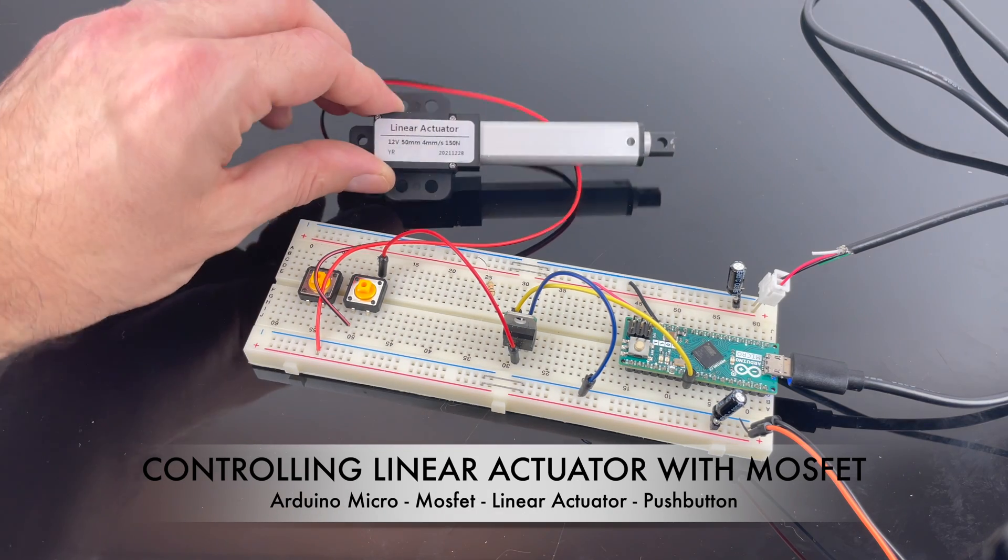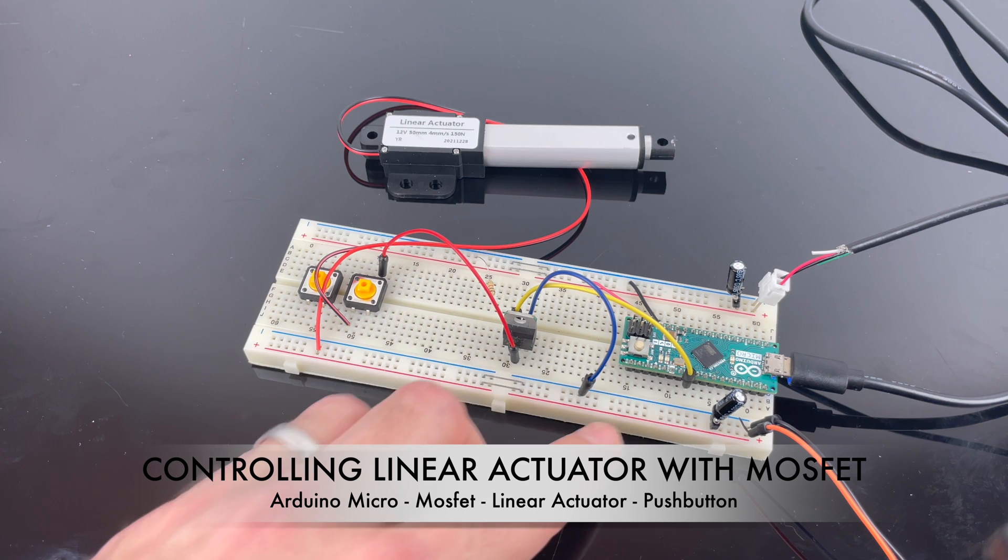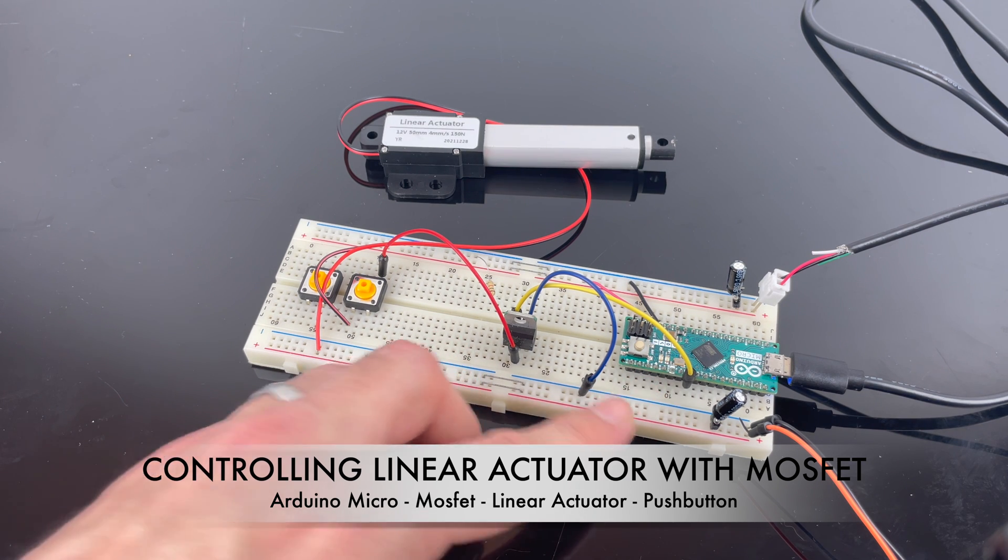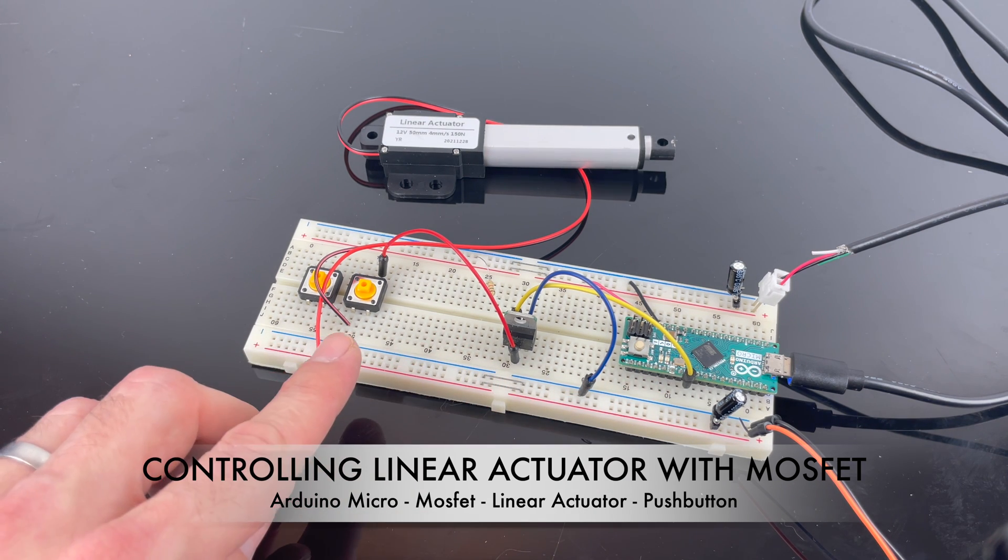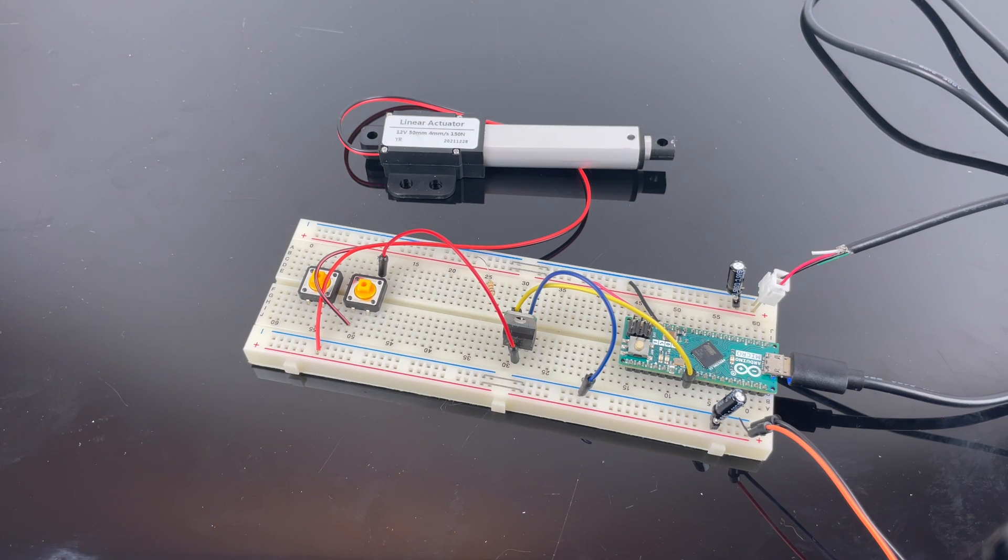This is the linear actuator 12 volts that I'm gonna run with an Arduino micro, a MOSFET and two buttons. So how is it all wired up?